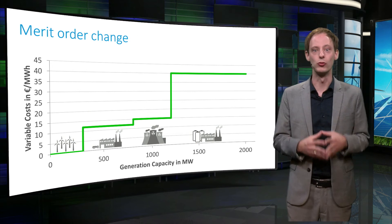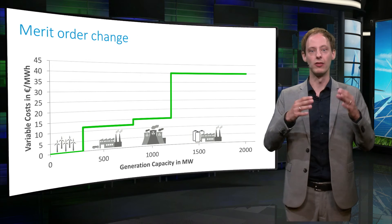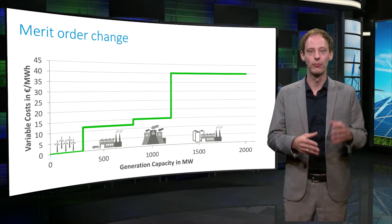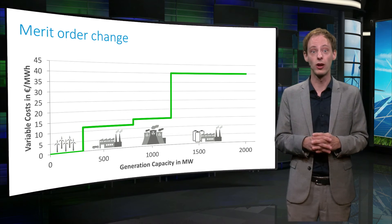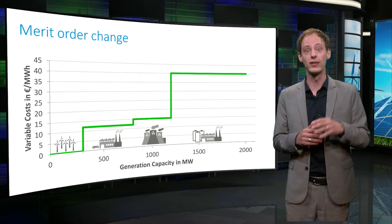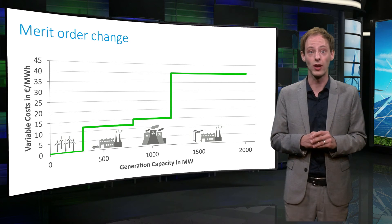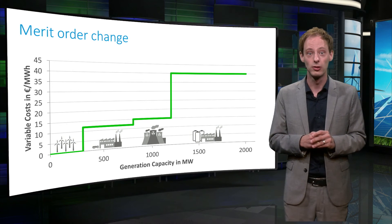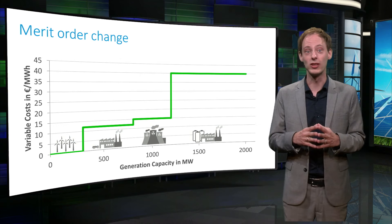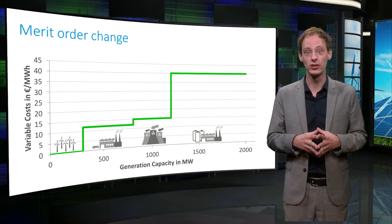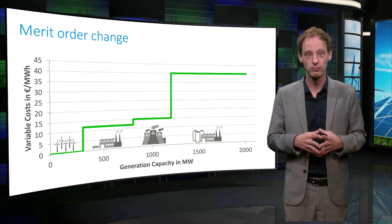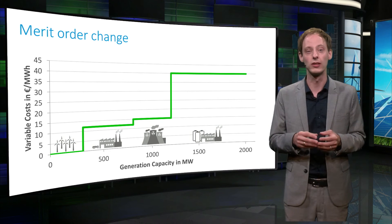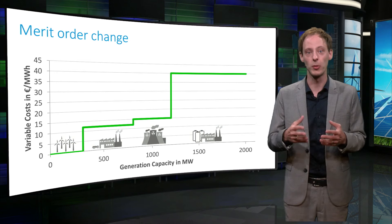So how does a CO2 price affect the ranking of the power plants? Well, CO2 costs are also variable costs, just like fuel costs, because the emissions of a plant are directly related to the plant's output. The more emission-intensive a power generation technology is, the more the producer is affected by this CO2 price, and as a result, electricity generated from fossil fuels becomes more expensive.